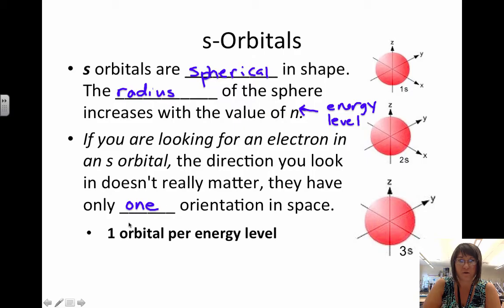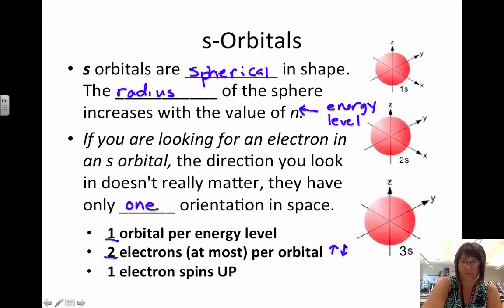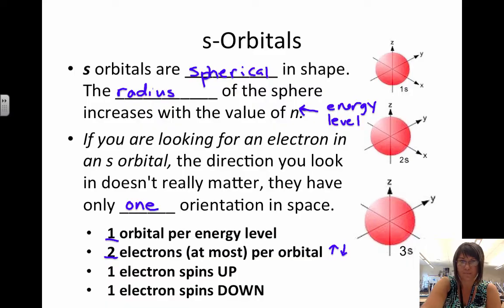Remember that in an s orbital there's only one type of s orbital per energy level. We can fit at most two electrons in that orbital, one that spins up and one that spins down. So that gives us two electrons that can fit inside a single s orbital.